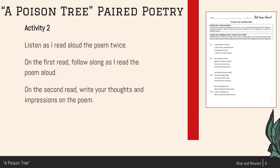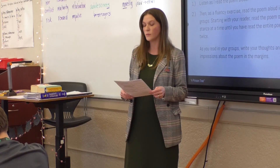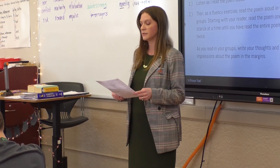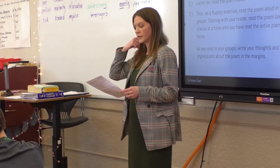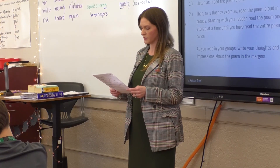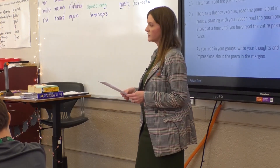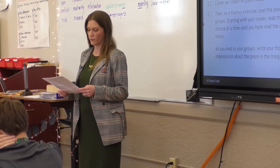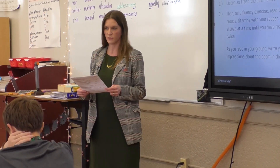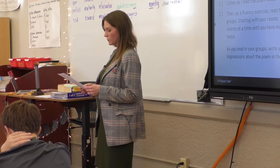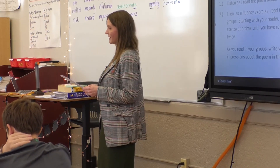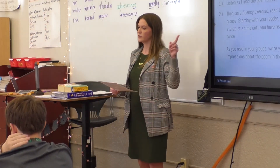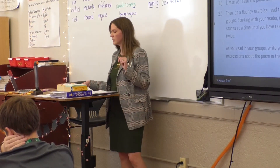"A Poison Tree." I was angry with my friend. I told my wrath. My wrath did end. I was angry with my foe. I told it not. My wrath did grow. And I watered it in fears night and morning with my tears. And I sunned it with smiles and with soft deceitful wiles. And it grew both day and night till it bore an apple bright. And my foe beheld it shine and he knew that it was mine. And into my garden stole when the night had veiled the pole. In the morning glad I see my foe outstretched beneath the tree. Readers, take over — start your groups reading aloud and write down your thoughts about the poem.